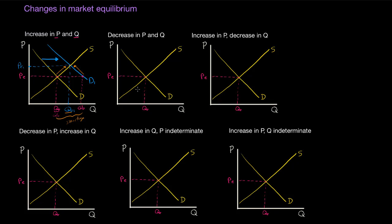What would cause a decrease in price and a decrease in quantity? Let's put a new PE1 and a new QE1. The answer is a decrease in demand to D1. If demand decreases for this good, then in the short run there would be a surplus — not a shortage. If the price remained at the original equilibrium of PE, the quantity demanded at the new demand curve D1 would be less than the quantity supplied, creating a surplus. So in order to restore equilibrium, the price must come down. As it does, quantity demanded increases along D1 and quantity supplied decreases along the original supply curve, achieving a new equilibrium at PE1 and QE1.